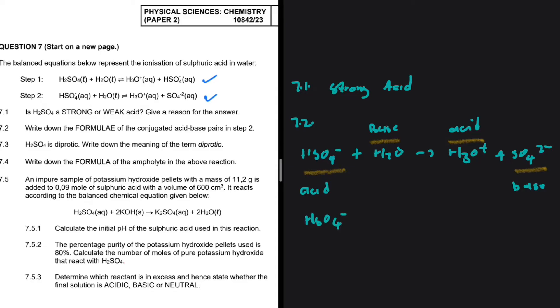HSO4 minus and SO4 2 minus, that is an acid-base conjugate pair. And H2O with H3O plus. That is how we answer 7.2.